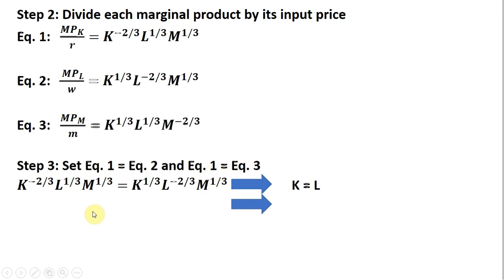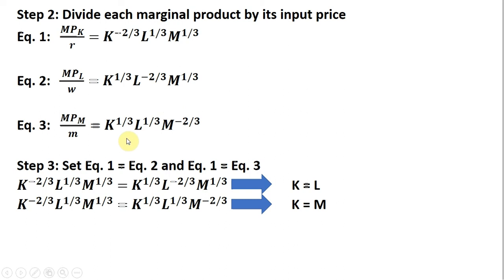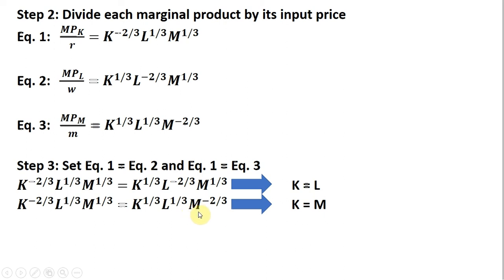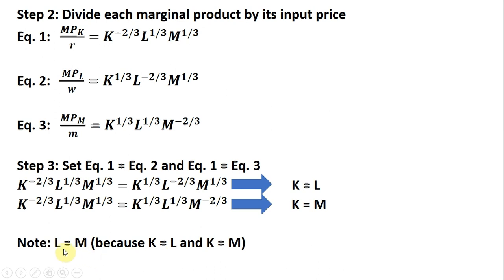Setting equation one equal to equation three: the L to the one-third powers cancel since they appear on both sides. Dividing both sides through by K to the minus two-thirds, the K to the minus two-thirds cancels, giving K to the one-third divided by K to the minus two-thirds, which is just K. Doing the same with M — dividing both sides by M raised to the minus two-thirds — leaves us with M. So we get K equals M. Note this also implies L equals M, because K equals L and K equals M.